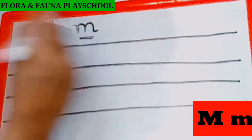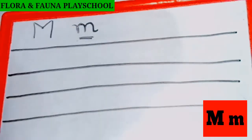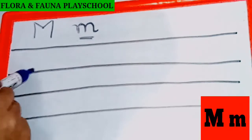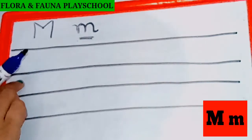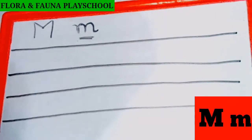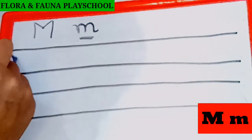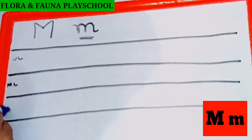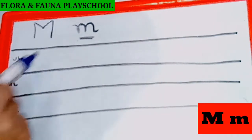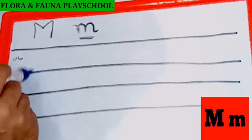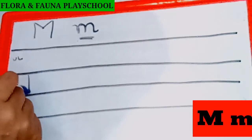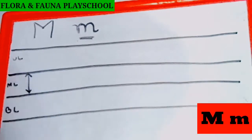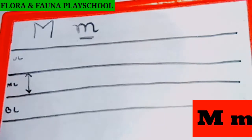So what we need to do is write M in the middle line. This is the upper line, this is the middle line, and this is the bottom line. Small M will be written in this middle line.